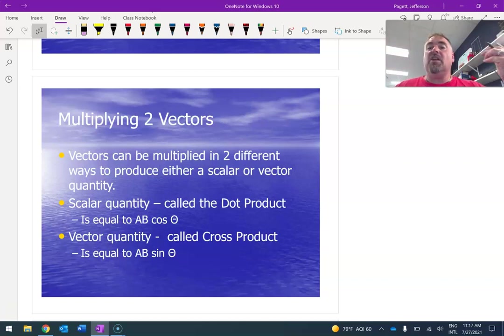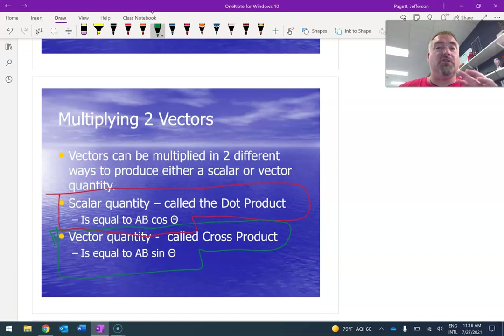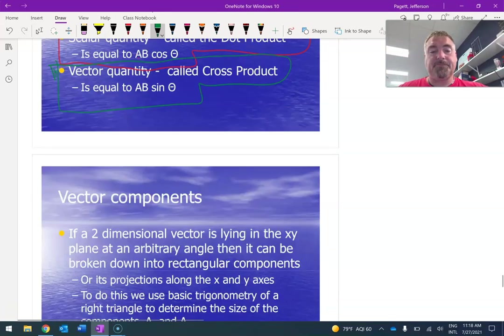The scalar quantity, if you multiply two vectors, will come back with a number. That number is just that. There's no direction on it. And that's called the scalar quantity or the dot product. And it's equal to the multiplying of the magnitudes times the cosine of the angle between them. The vector quantity will return another vector. And it's called the cross product. And these, we'll talk in greater detail later on.